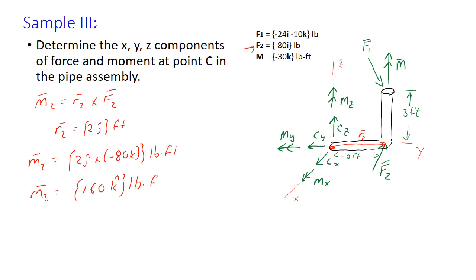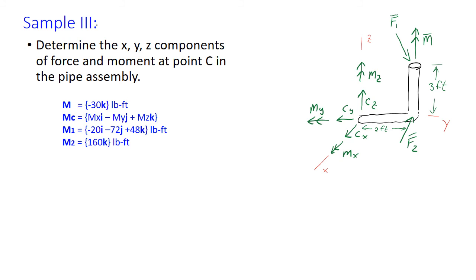We have our moments all summarized here. We've got our couple that was applied, we have our internal reaction at point C that's the resultant, and then we have our moments of force M1 and M2. Just as we did with our forces, we can look at our i, j, k or x, y, z directions. So for x we have Mx and minus 20, so we'll sum those. Mx minus 20 is equal to 0. Mx is equal to 20 pound-feet. That's the units for all these moments.